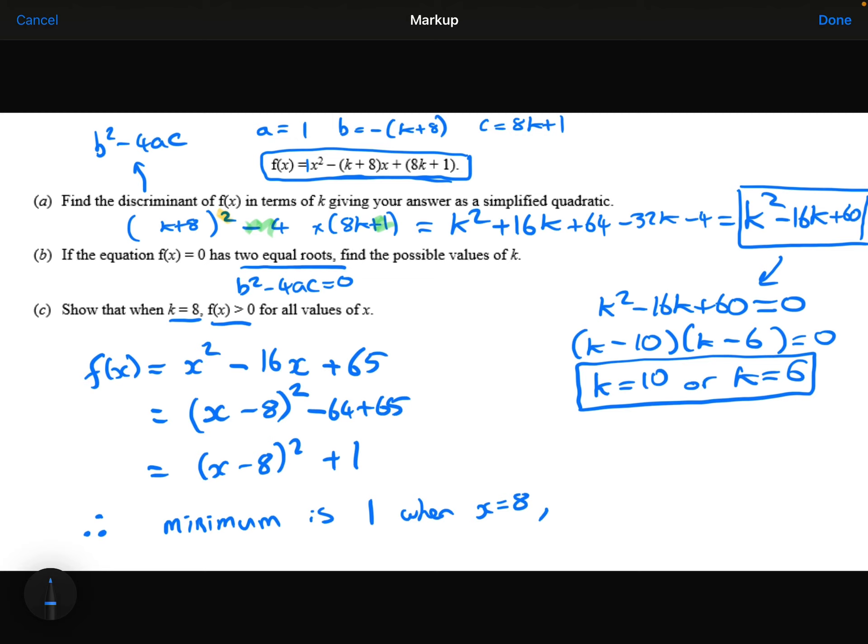So minimum is 1 when x is 8. Therefore, always greater than 0 for all values of x. And we're done.